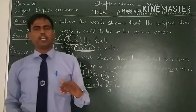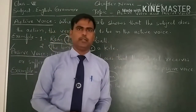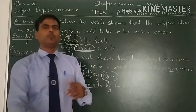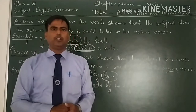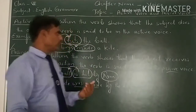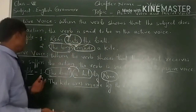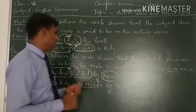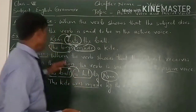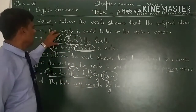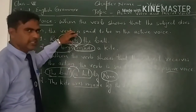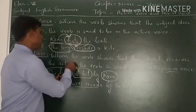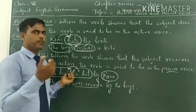In active voice, the subject does the action itself. In passive voice, the subject receives the action — it suffers the action. So if the subject does the action, it is active voice. If the subject receives the action, it is passive voice.